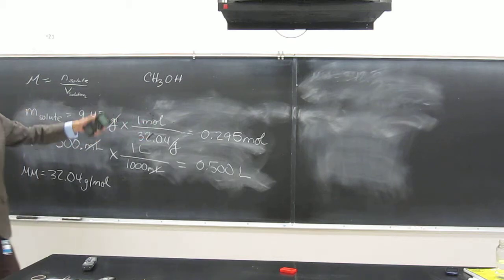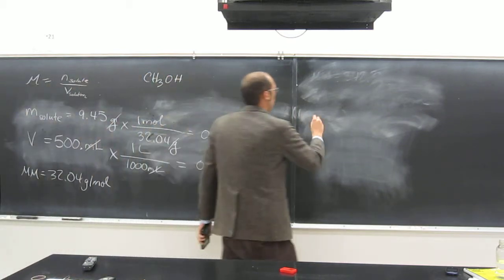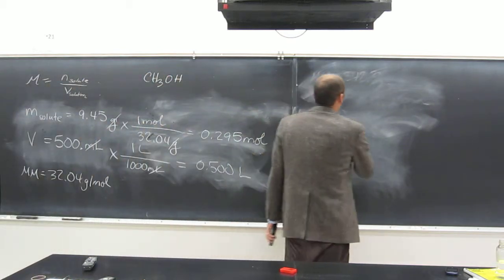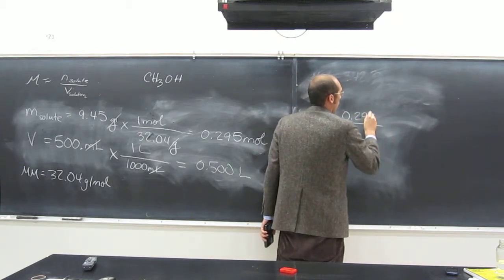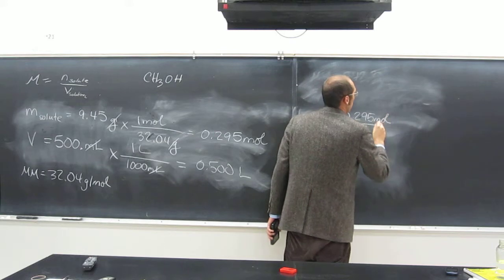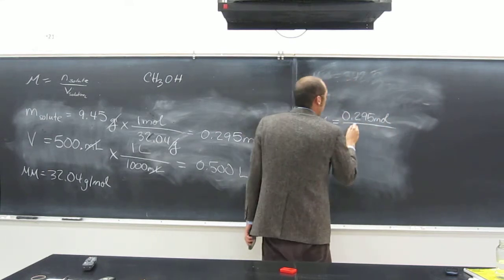Okay, so what is our, the number of sig figs our answer is going to be to? Three. Three. What's going to be on top? 0.295. So we're going to go with 0.295 moles. And on the bottom?